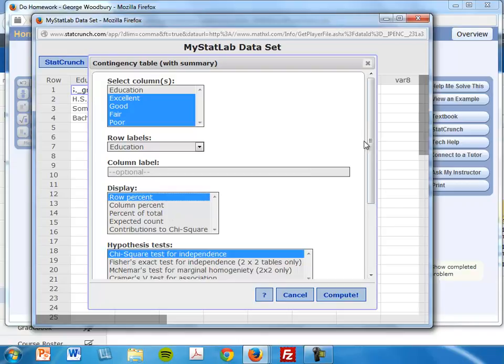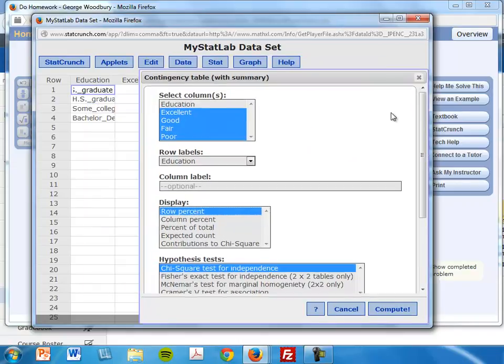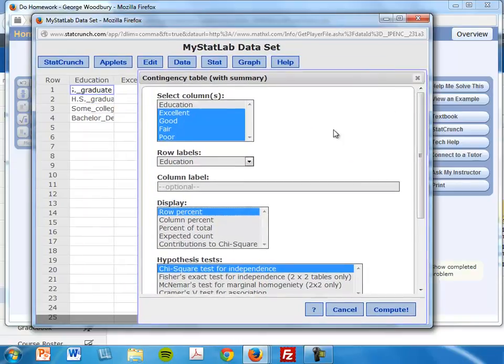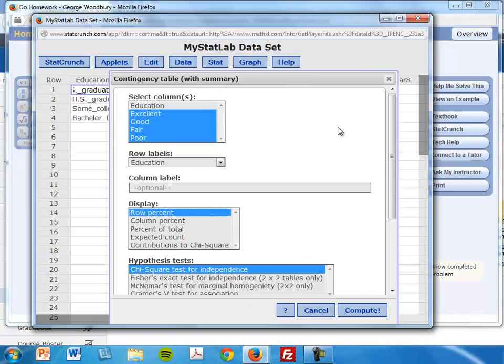Column percent would have been if I was doing one for the levels of health. What people with excellent health, what percentage are not high school graduates, high school graduates and so on. But this time we were going the other direction.